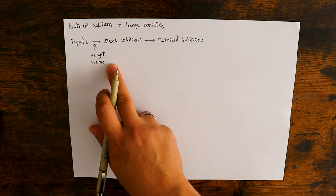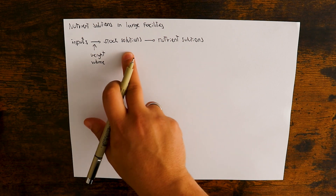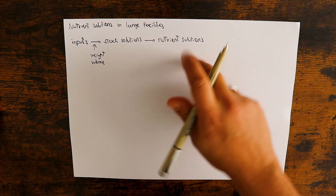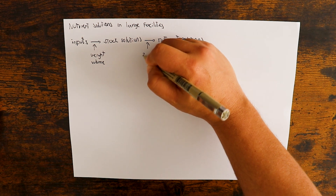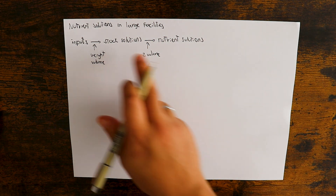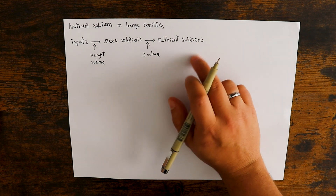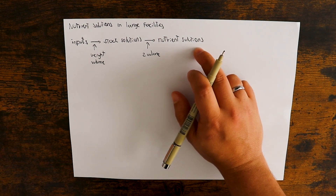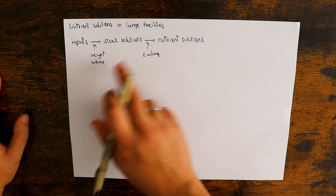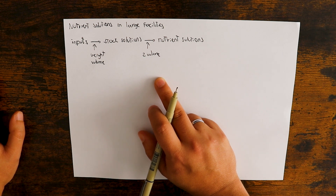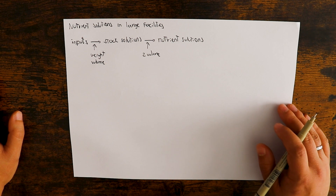We already have two steps that introduce error going from the inputs to the stock solutions. Then when we go from the stock solutions to the nutrient solutions, we have two volume measurements: we need to measure a volume of stock solution and a volume of water. So we have basically these four measurements that introduce error into the process, and what we want is to minimize these errors to ensure they are as small as possible at a large scale.